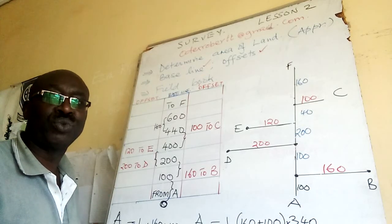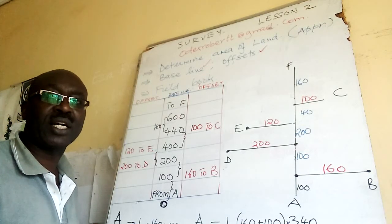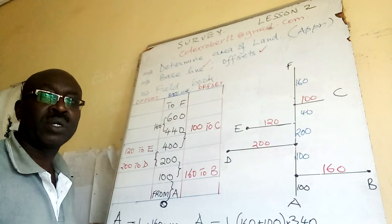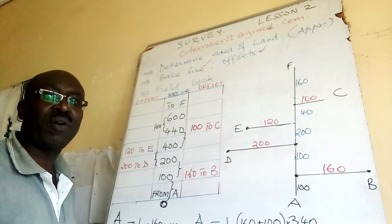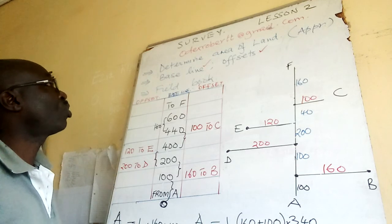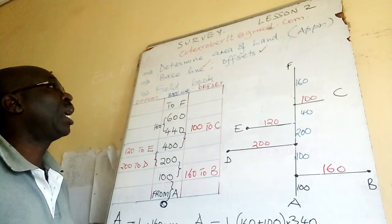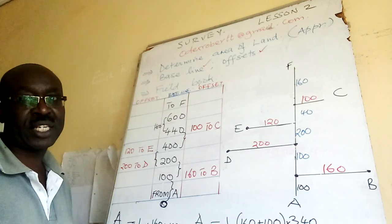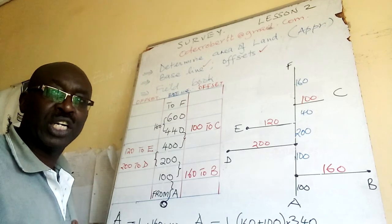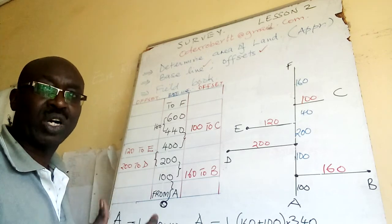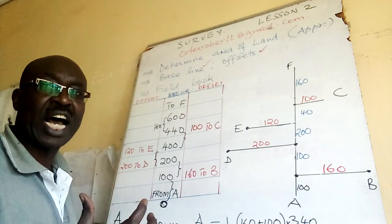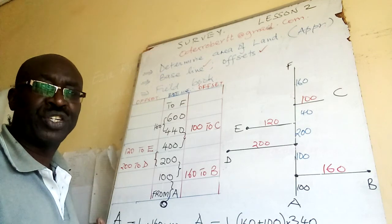Welcome to our second lesson on survey. In our previous lesson on survey we talked about baseline and offsets. Today we are going to see how do you come up with a diagram.